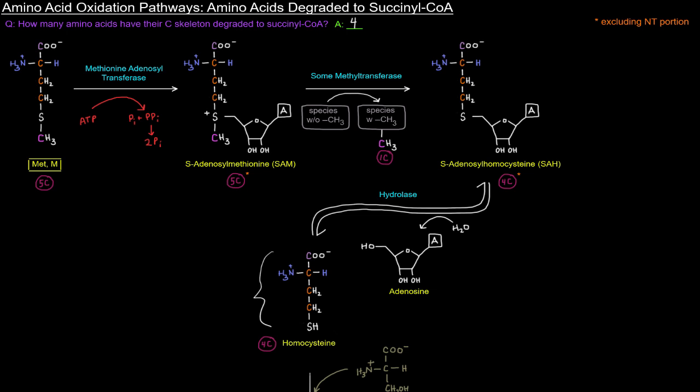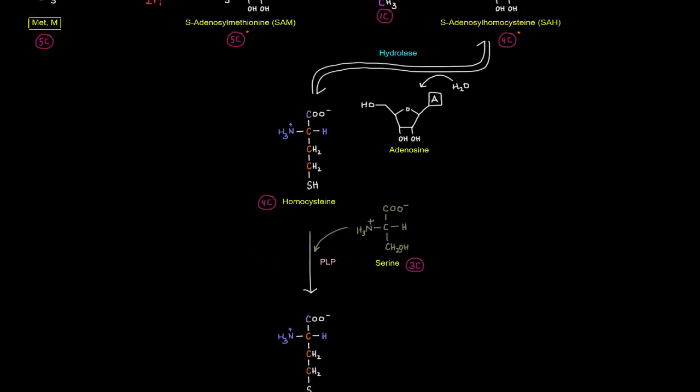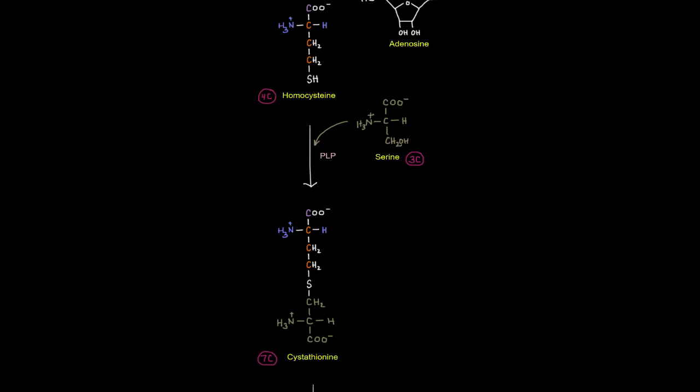Okay. So now we have homocysteine, a four carbon amino acid. And we're going to add to that a serine, a three carbon amino acid to get cystathionine. And that's going to be catalyzed by cystathionine beta synthase.